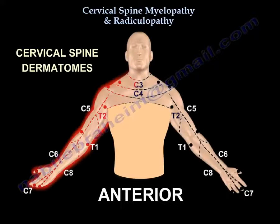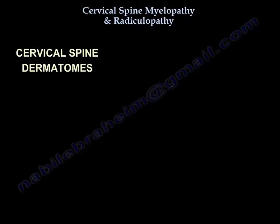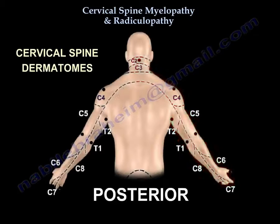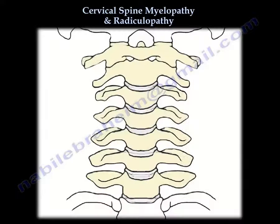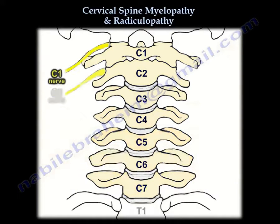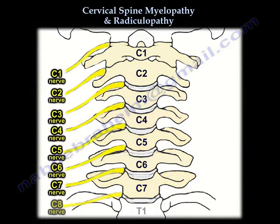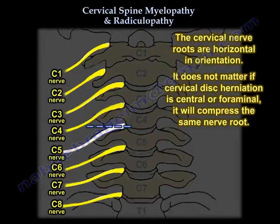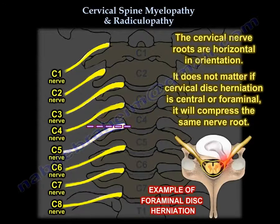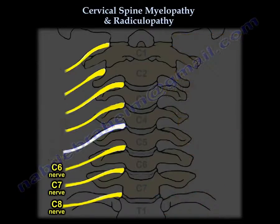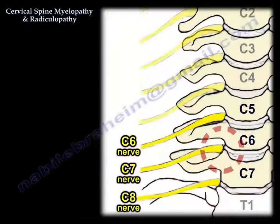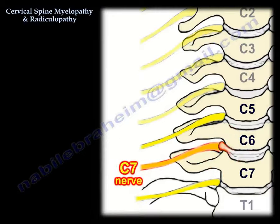Let's understand the arrangement of these nerve roots. You have seven vertebrae but eight nerve roots. The cervical nerve root is horizontal in orientation, so it doesn't matter if the disc is central or foraminal — it will get the same nerve root. For example, a disc at the C6-C7 level will affect the C7 nerve root.